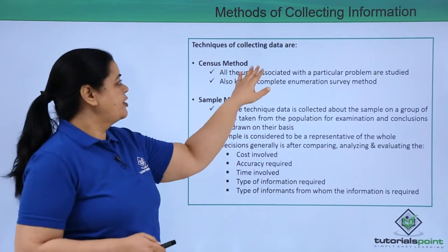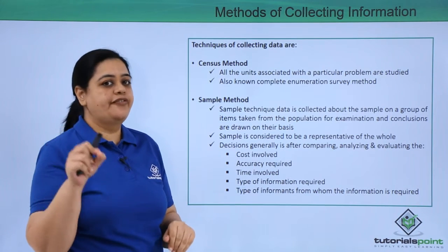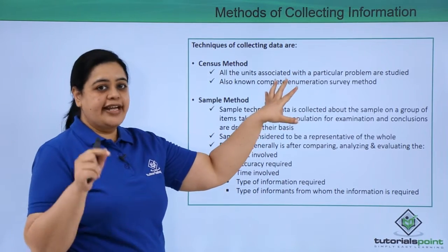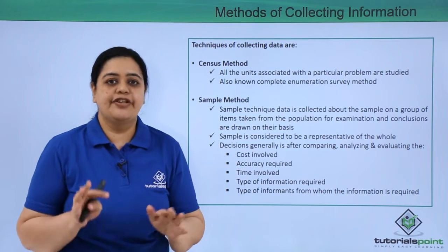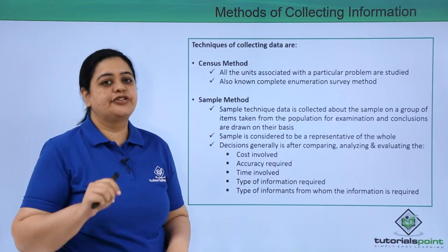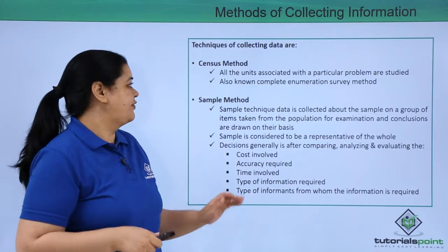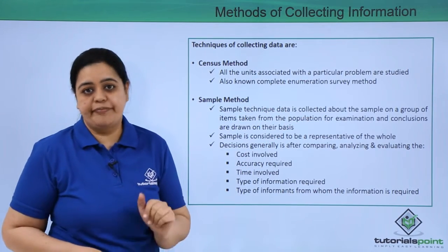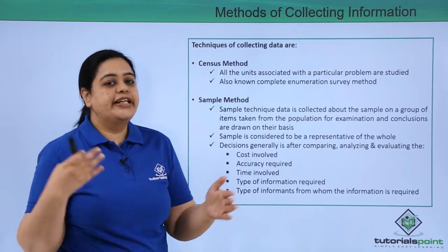The first technique is the census method. In this, each and every unit associated with a particular problem would be studied. For example, if I want to study the population of India, the entire 1.25 billion population of India would be surveyed. This is also known as the complete enumeration survey method.